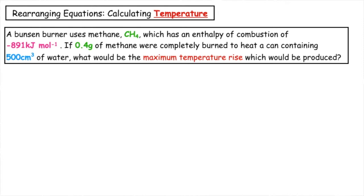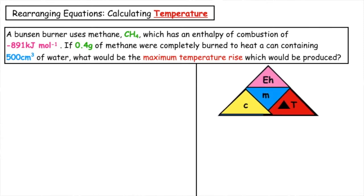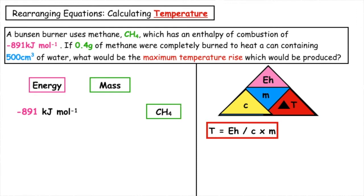The first thing we have to do is split our page, and on one side we're going to do our proportion, and on the other we're going to use 'Every House Can't Make Triangle Toast.' The question wants us to calculate temperature, so the formula we're going to use is T is equal to E_h divided by C times m. We can see that we've got a relationship between energy and mass — 891 kilojoules per mole is produced when one mole of methane burns, and the mass of one mole is 16 grams.